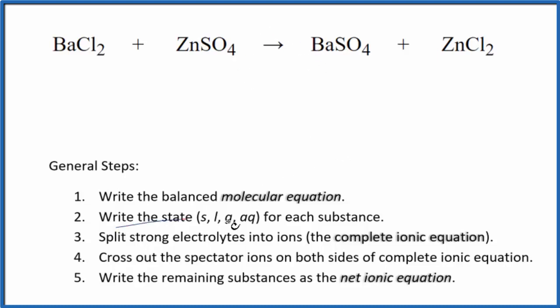Next, we can write the state for each substance. So chlorides are almost always soluble. We'll write AQ. That's going to be aqueous, dissolved, split apart into its ions. Sulfates, in general, soluble, put a little aqueous there.